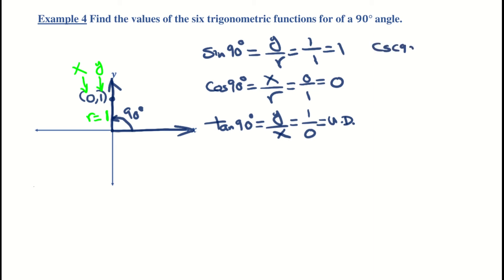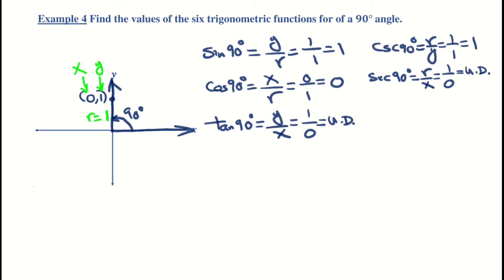Continuing with 90°: cosecant of 90° = r/y = 1/1 = 1. Secant of 90° = r/x = 1/0, which is undefined — any zero in the denominator gives undefined. Cotangent of 90° = x/y = 0/1 = 0, which is well defined. That's how you handle quadrantal angles.